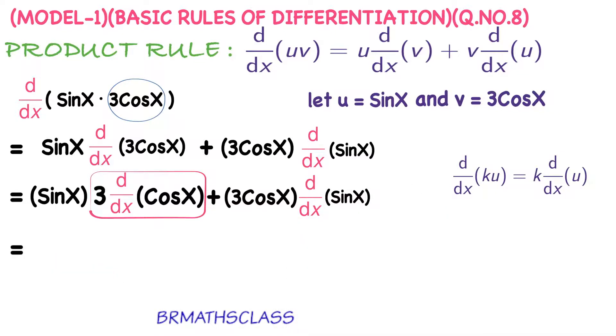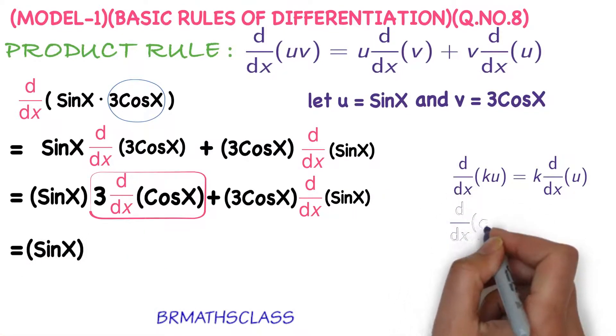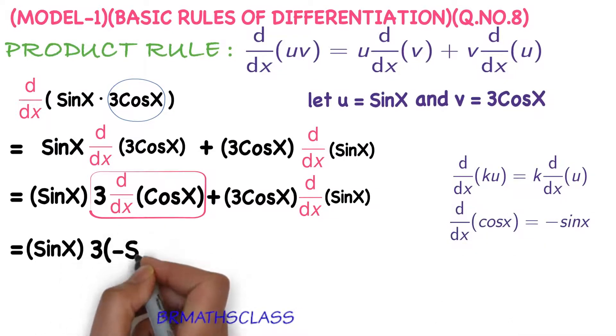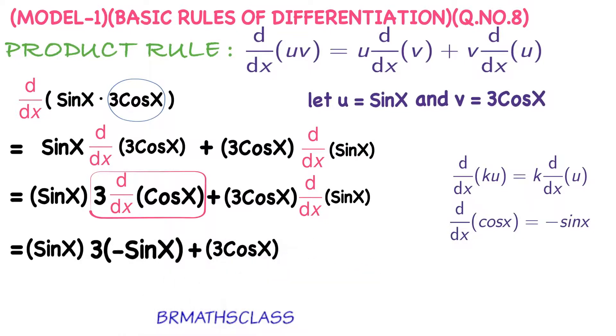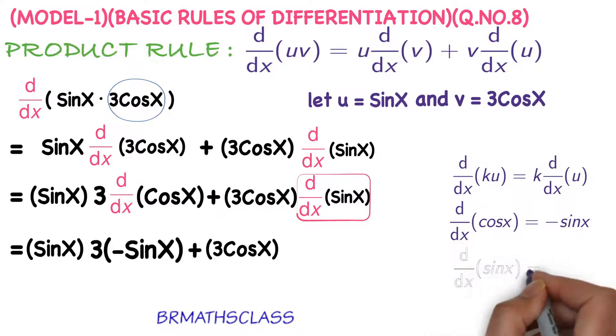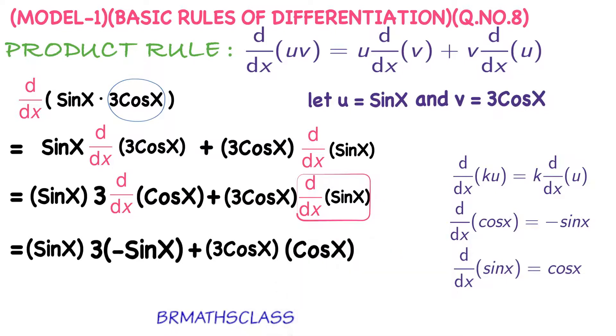Continuation: sin x into derivative of cos x. We know this formula - derivative of cos x is minus sin x. So 3 into minus sin x plus 3 cos x into derivative of sin x. Derivative of sin x is cos x.